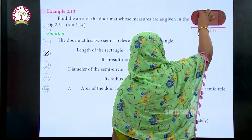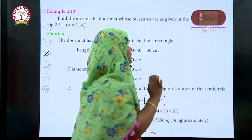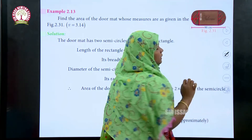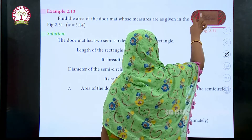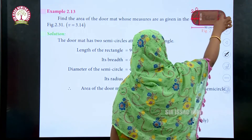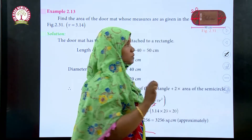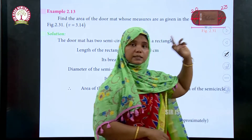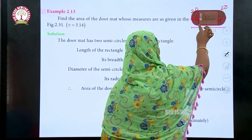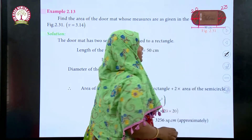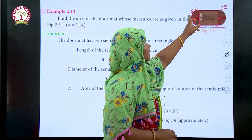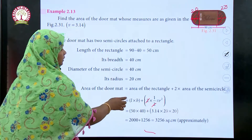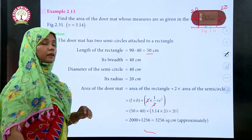The breadth is 40 centimeters. The radius of each semicircle is 20 centimeters — one on each end. So the total length occupied by the two semicircles is 20 plus 20, which is 40. The length of the rectangle is 90 minus 40. What is 90 minus 40? We get 50.